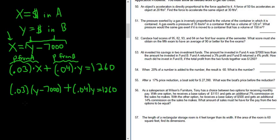Let's be really careful here. Now let's distribute and solve for Y. So 0.03 times Y is just 0.03Y, and then 0.03 times 7,000, so 3% of 7,000 is 210, so minus 210, plus 0.04Y, and that equals 1,260.